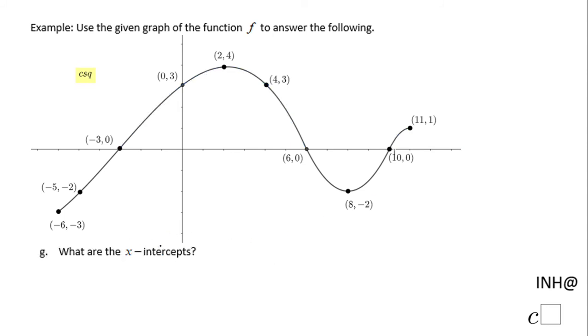Part G, they ask us what are the x-intercepts? The x-intercepts are the points where the graph crosses the x-axis. One time here, negative 3 and 0.